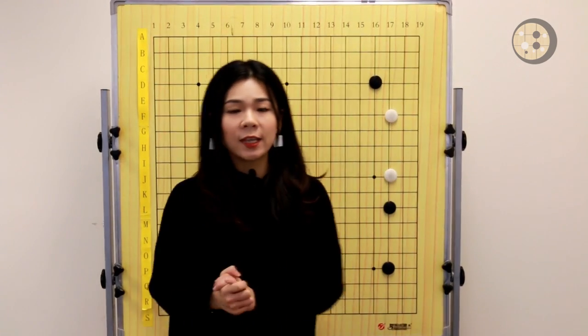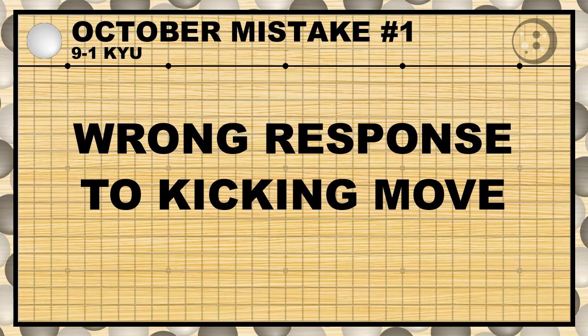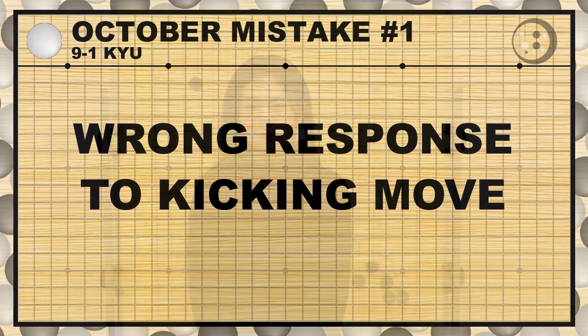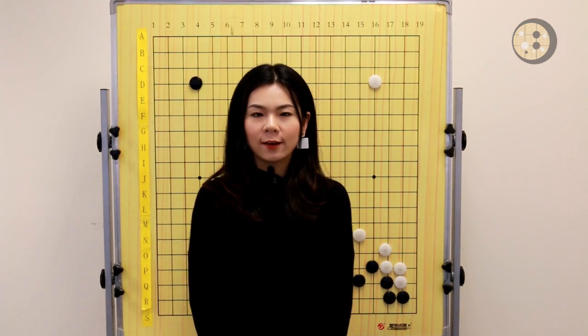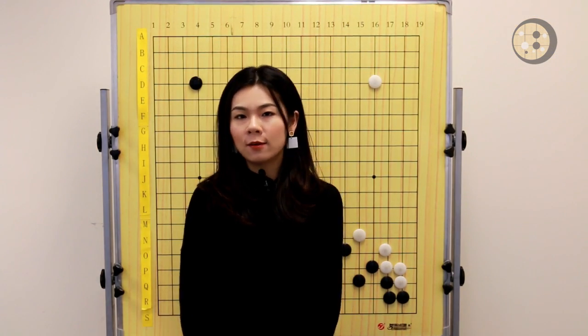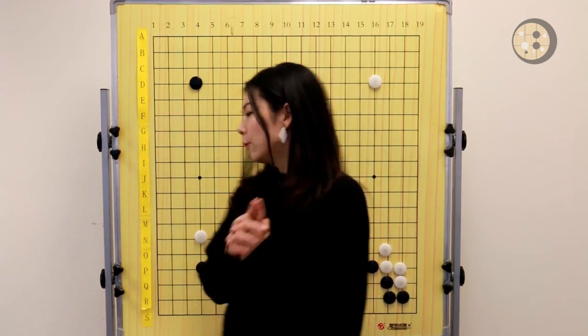These are the mistakes by 19 to 10 kyu players. Now let's move to 9 to 1 kyu players. The first mistake by 9 to 1 kyu players is the wrong response to a kicking move.